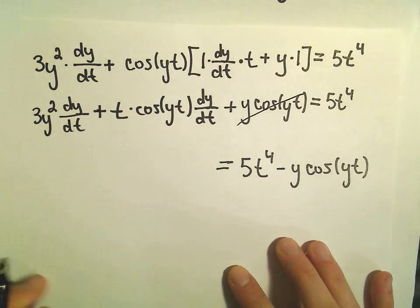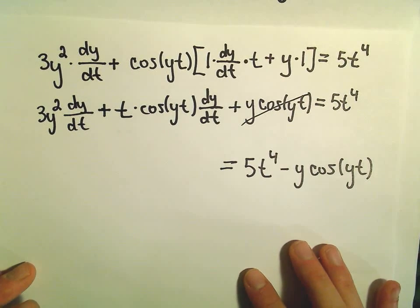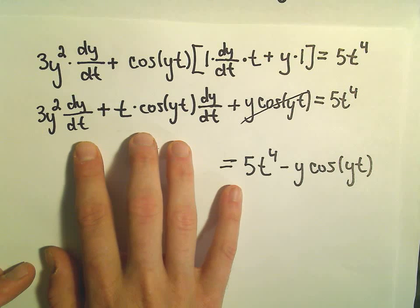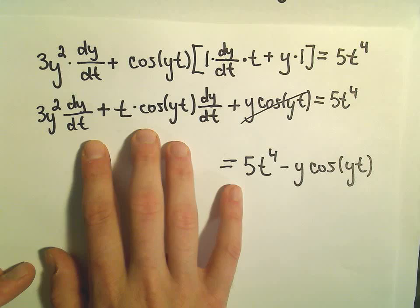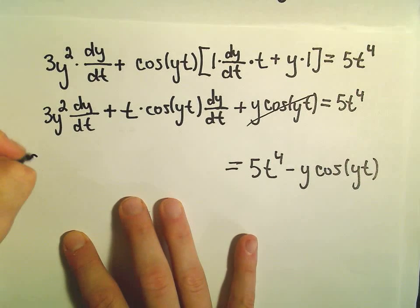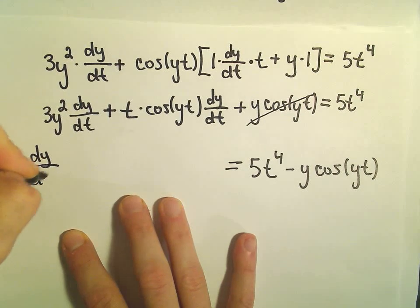Notice on the left, all we would be left with would be the 3y squared dy dt plus t times cosine of yt times dy dt. And what I'm going to do now is just factor that dy over dt out.